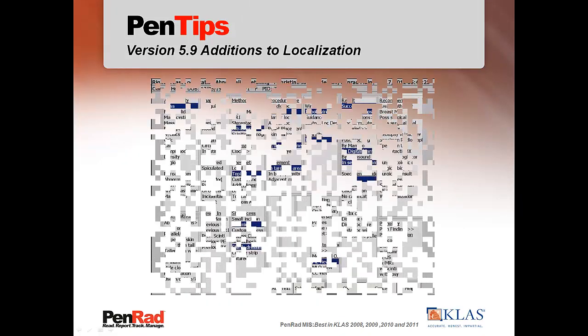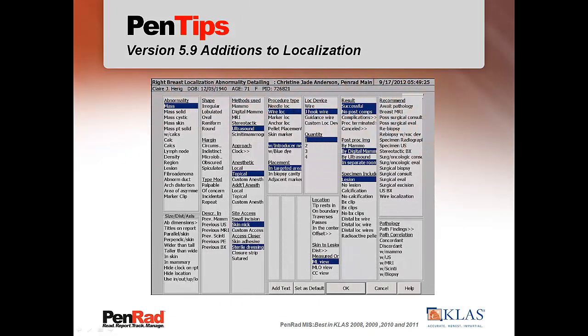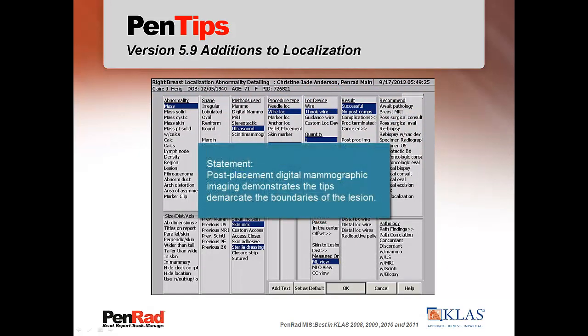If bracketing lesion, just indicate more than one wire and select On Boundary. This will generate, for example: post-placement digital mammographic imaging demonstrates the tips demarcate the boundaries of the lesion.